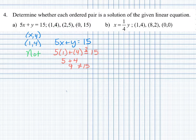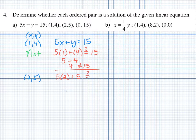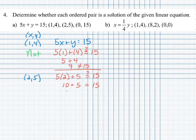Let's check the next point, (2, 5). We replace x with 2 and y with 5 in the original equation: 5 times 2 plus 5 gives us 10 plus 5, which does equal 15. So yes, this is a solution to the given linear equation.